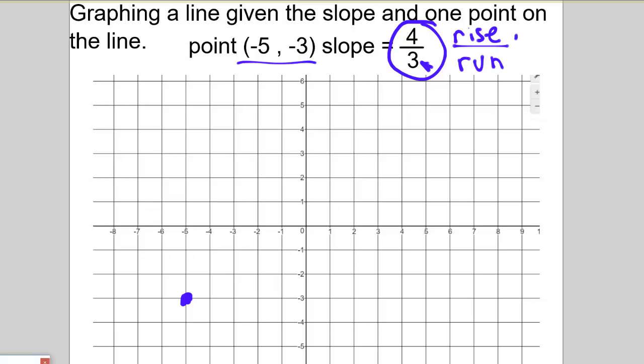So if rise is positive, you go up. If run is positive, you go right. So they're both positive, so I'm going up and to the right. So I'm going to go up 4 and to the right 3 from the point that I started with. Don't start from the origin, start from the point that's on the line.